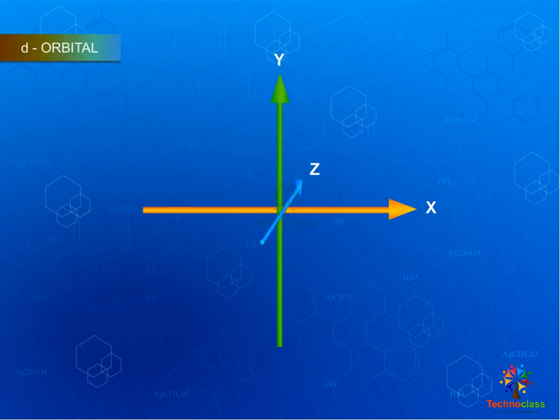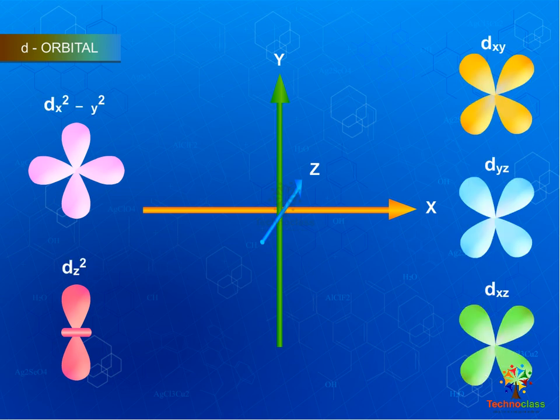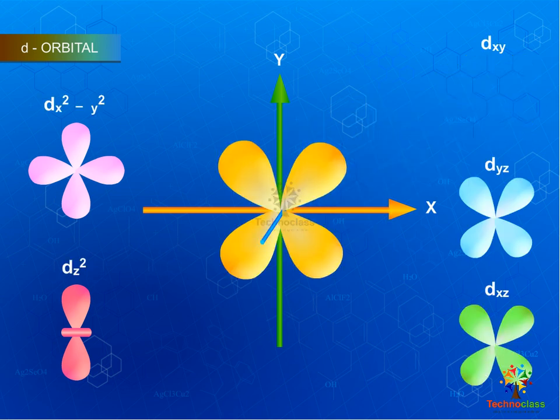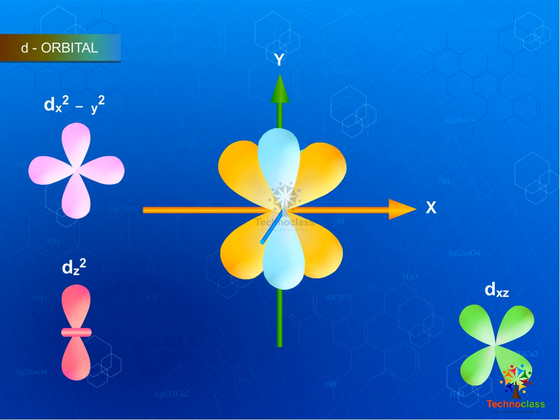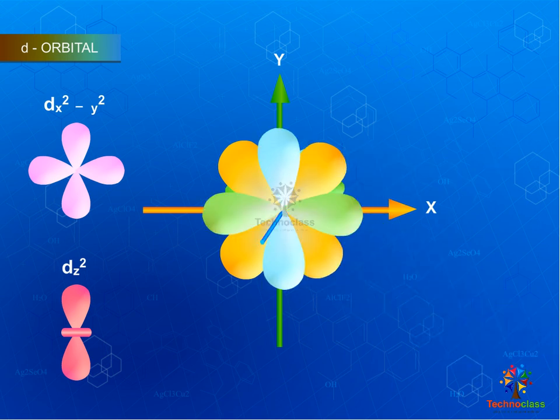D Orbitals or Diffuse Orbitals have 5 possible orientations. D xy, D yz, D zx Orbitals are clover leaf shaped, present between the axes.